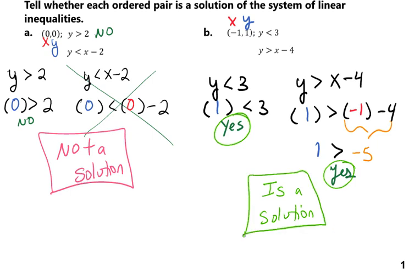So if you're given an ordered pair, you need to plug them in to your inequalities. Both of them have to be yeses in order for it to be a solution. If even one of them is a no, the answer is no, it's not a solution.